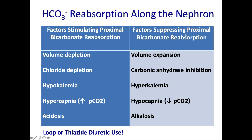Factors that suppress proximal bicarbonate reabsorption — just think about the opposites: volume expansion, inhibition of carbonic anhydrase with acetazolamide (which causes bicarbonate spillage into urine), hyperkalemia, hypocapnia, and alkalosis.